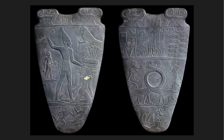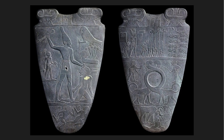This is the Palette of Narmer. Traditions here: hierarchy of scale — Narmer is depicted much larger than his enemy, who is still pretty large to show it wasn't an easy battle, but much larger than his servant. We're using registers to separate narratives and scenes, and the composite stance: shoulders are frontal, head is in profile, eye is frontal, and hips and legs are in profile.